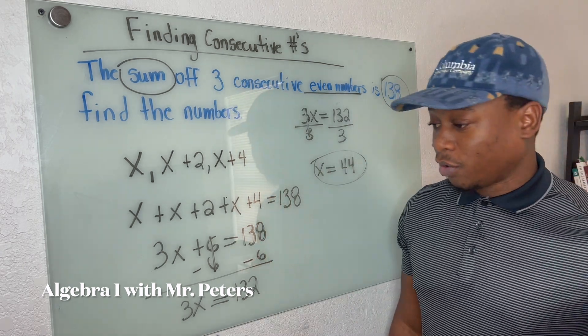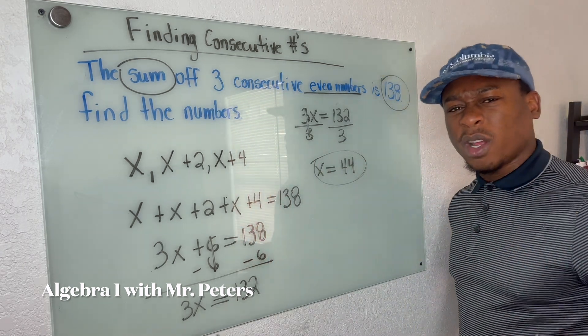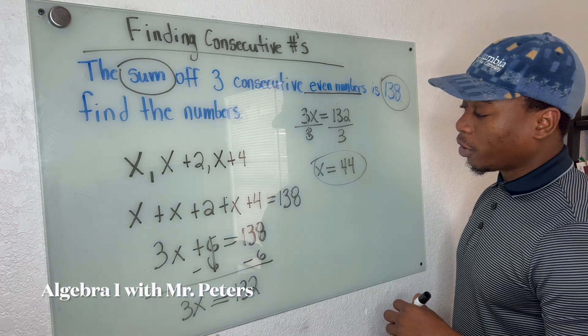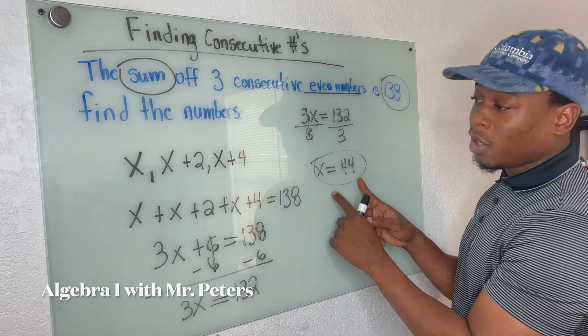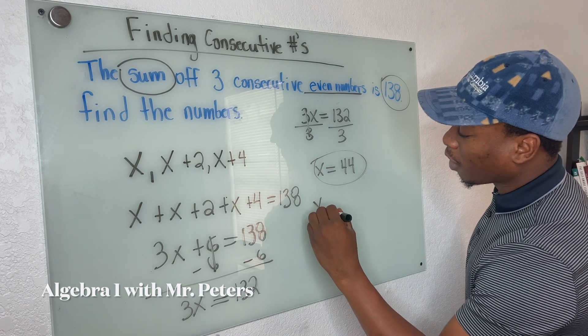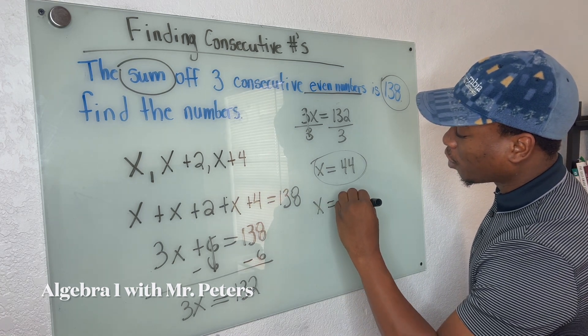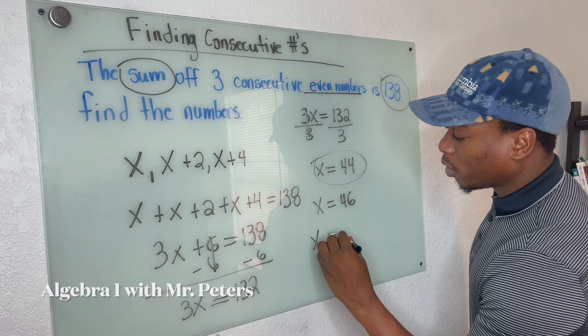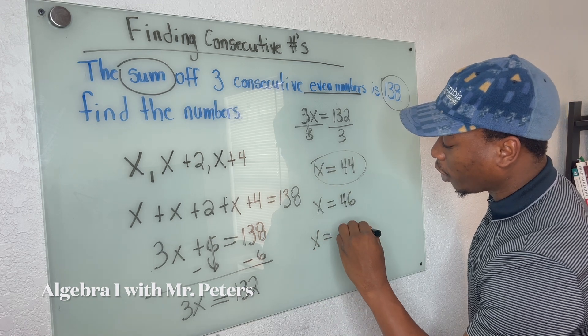Let's just double check that answer real quick. It is 44. So this is our first x. The second x tells us to add two more. So we know our second x is going to be 46. And then the last one is going to be 48.